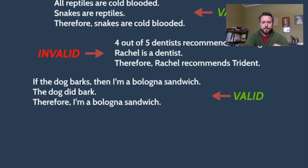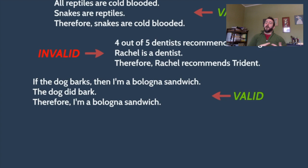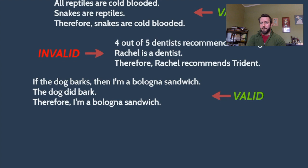Consider this third argument: If the dog barks, then I'm a bologna sandwich. The dog did bark. Therefore, I'm a bologna sandwich. This argument is actually valid. If you're wondering how it could possibly be valid, consider your objection. Are you thinking it's not valid because I'm not, in fact, a bologna sandwich? Keep in mind that whether an argument is valid has nothing to do with whether the conclusion is true or false — it has to do with the relationship between premises and conclusion.